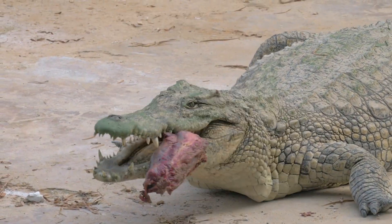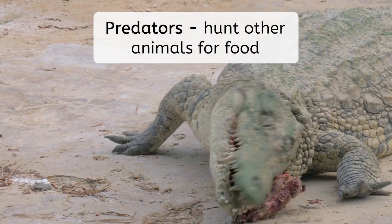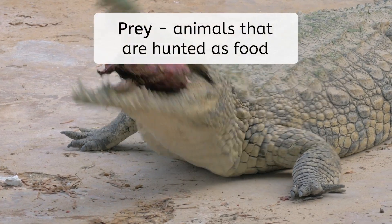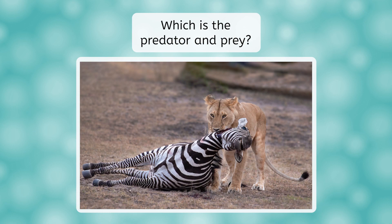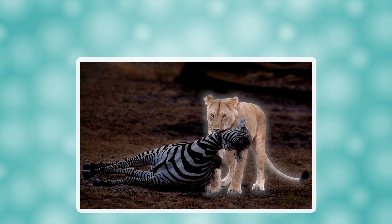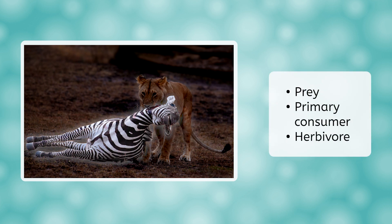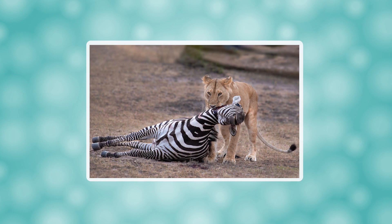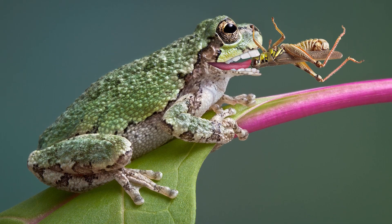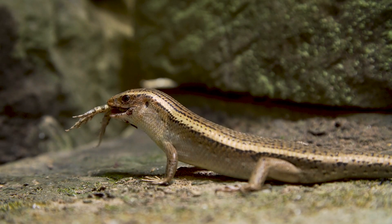Within a community, some animals are predators and others are prey. Predators are animals that hunt other animals for food; the animals that are hunted are the prey. Which animal is the predator here? The lion, because she has just captured a zebra, which will make a tasty meal. Lions are secondary consumers because they are carnivores. The zebra is the prey and is also a primary consumer, or herbivore. Can you think of animals that might sometimes be predators but other times be prey? Frogs spend their days hunting bugs and worms, until they themselves are hunted by a lizard or maybe a large bird.